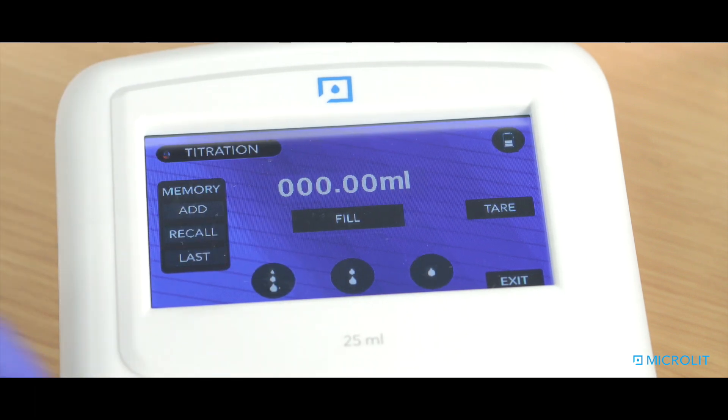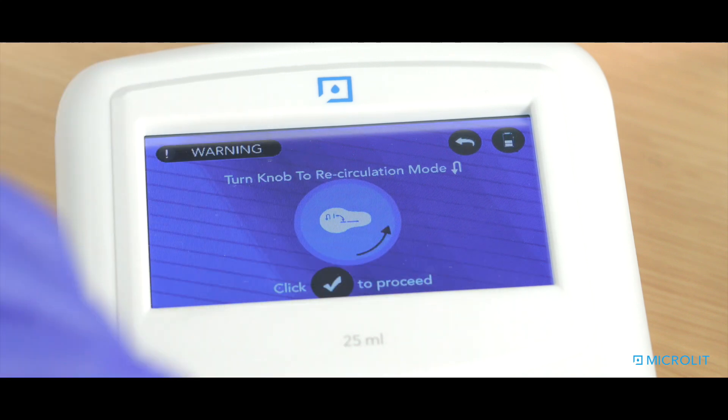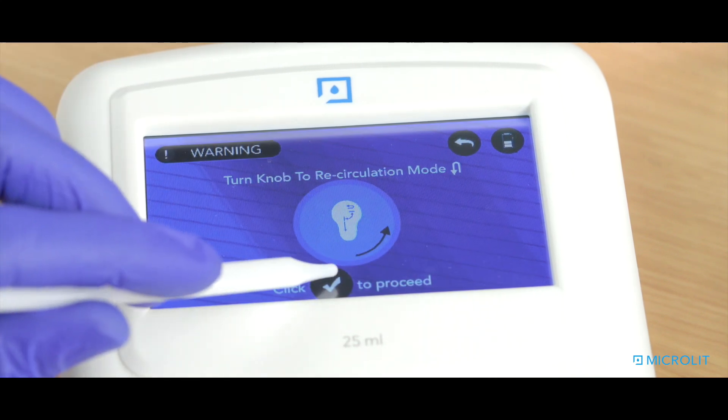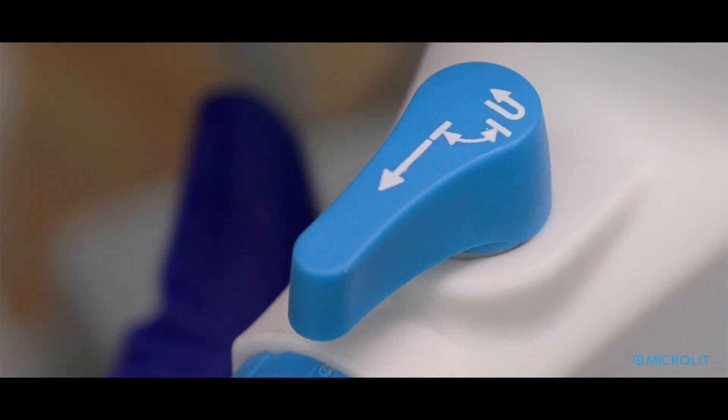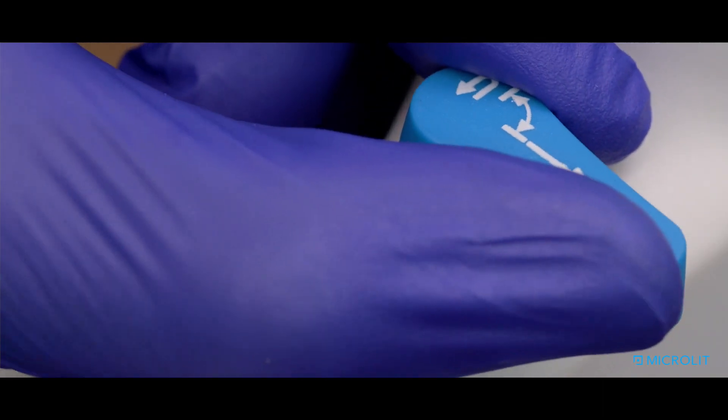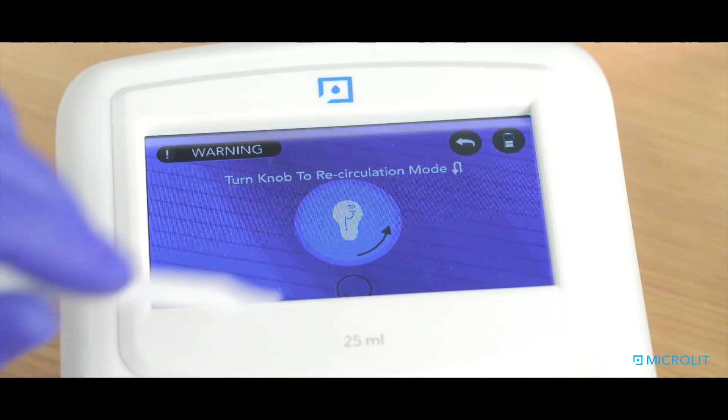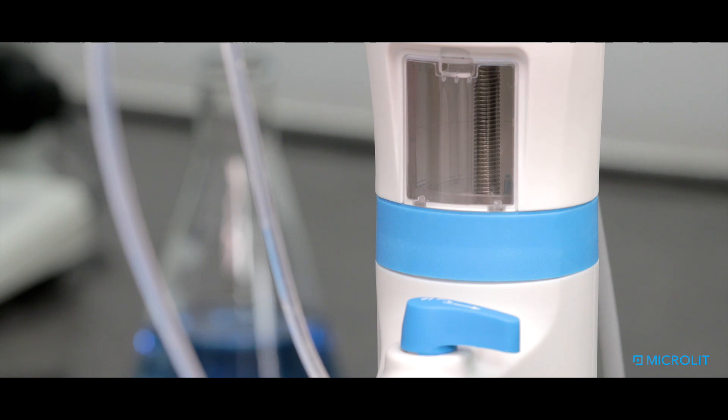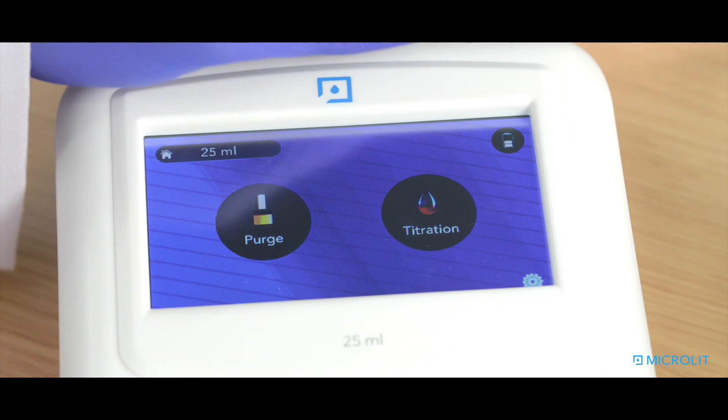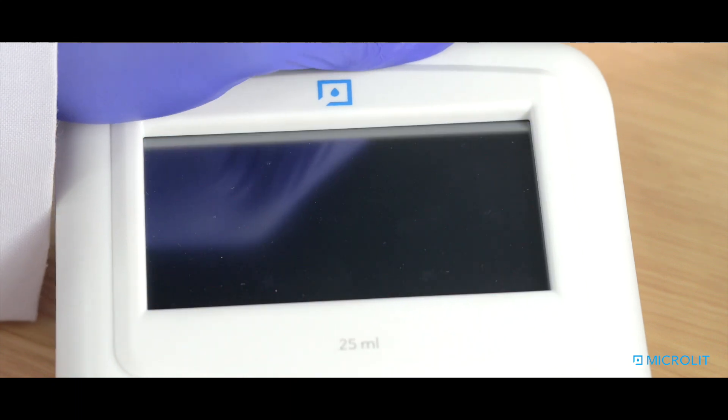To end working with eBuret, press the exit button. The panel will warn you to turn the knob in the recirculation mode. Click on the tick button to proceed. The piston will empty the barrel and go to the home position. Press the on-off button to switch off the control panel.